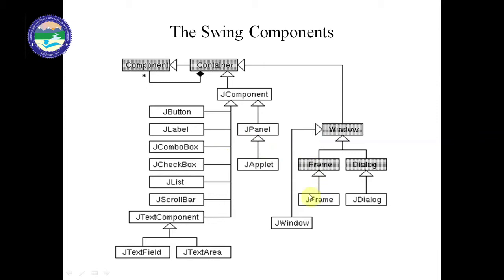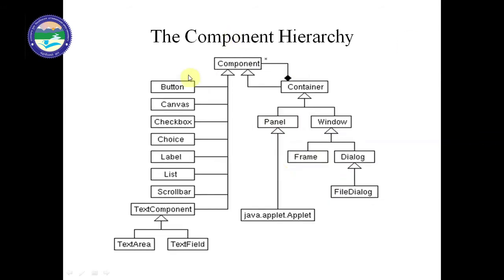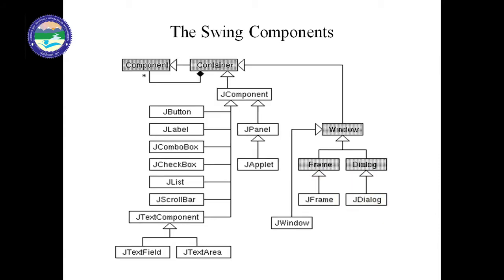If we are using the applet, we will have JPanel, and inside JPanel we have JApplet. In case of AWT, we have container, and inside the container we have panel; inside window we have frame or dialog, and inside dialog we have file dialog. This is the hierarchy of Java AWT, and the other is the hierarchy of Java Swing.